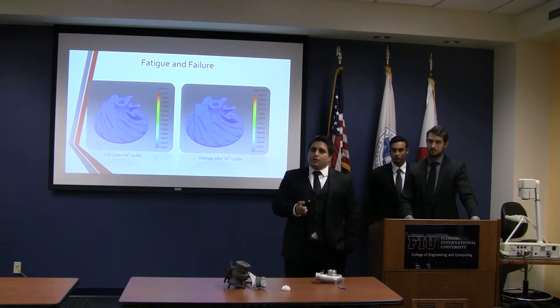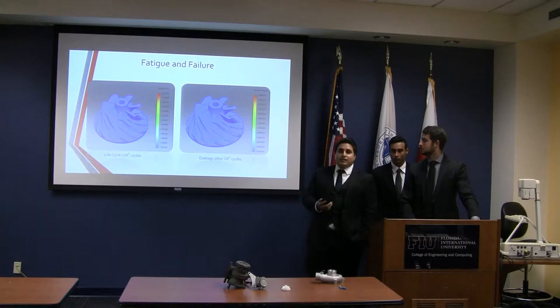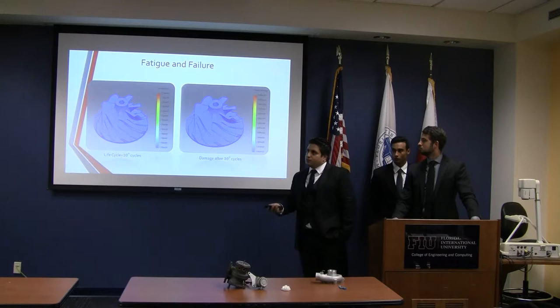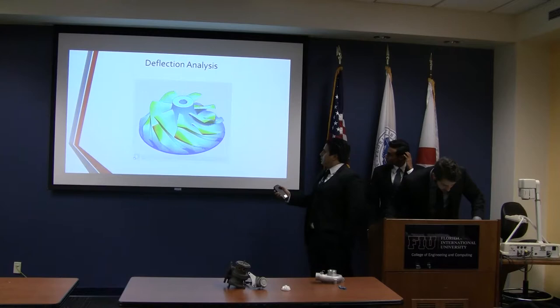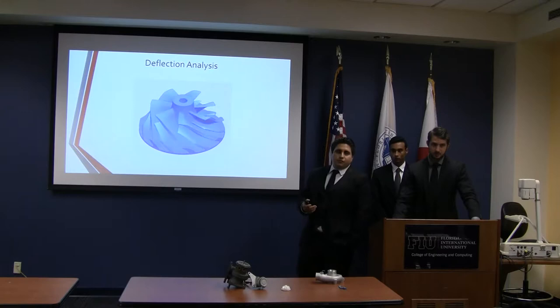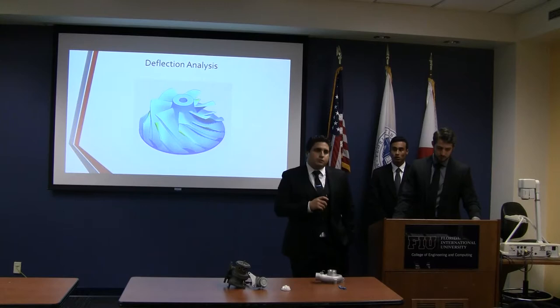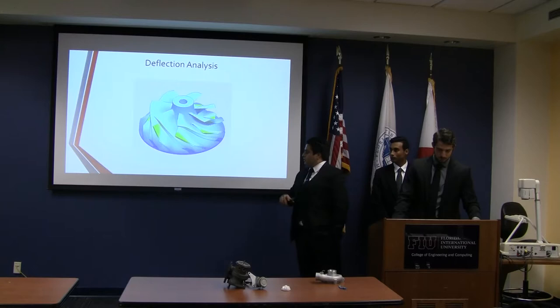The stock compressor wheel that was passed around ran for 200,000 miles in the car and is still in very good condition, showing high reliability. For the deflection analysis, at 140,000 RPM the maximum deflection would be at the very tips of the blades, which is why blade thickness is such an important parameter.